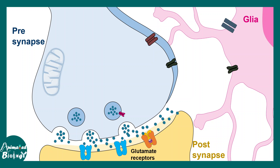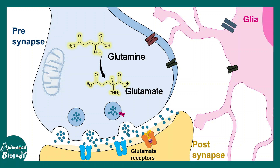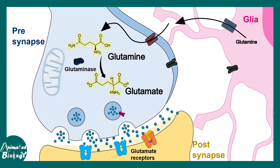In the pre-synapse, when the action potential comes, there is release of glutamate into the synaptic cleft, which binds to the post-synaptic glutamate receptors. Glutamate gets synthesized from glutamine via the enzyme glutaminase, and the astrocyte provides this glutamine to the neurons. This glutamate, once produced, is loaded by specific vesicular glutamate transporters into synaptic vesicles, and when the action potential comes these vesicles can be released.